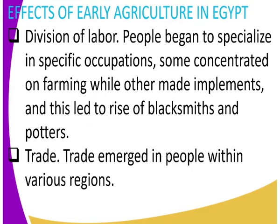Another effect of early agriculture in Egypt was trade. Trade emerged among people within various regions. As there was enough food, people could sell the excess — that is how trade emerged. Trade emerged among people within various regions.